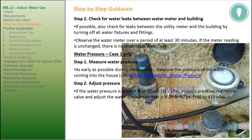Water pressure, Case 1 only. Step 1: measure water pressure as early as possible during construction — measure the pressure of the water coming into the house. Step 2: adjust pressure. If the water pressure is greater than 60 psi or 415 kilopascals, install a pressure regulation valve and adjust the water pressure so that it is 20 to 60 psi or 140 to 415 kilopascals.